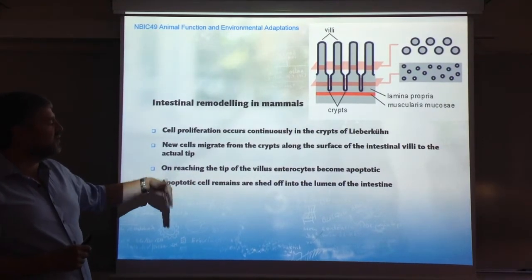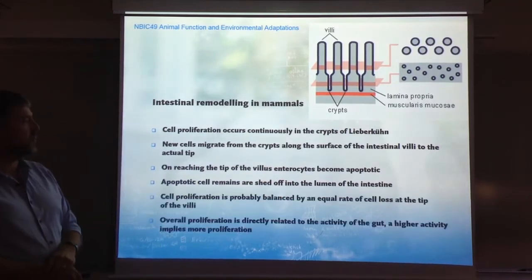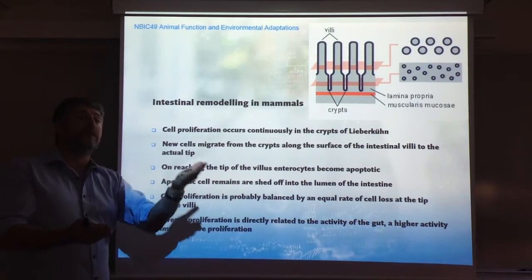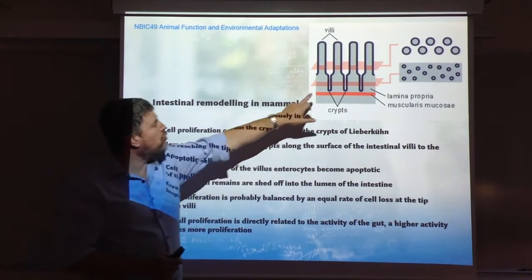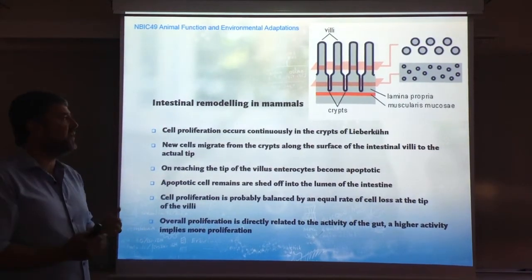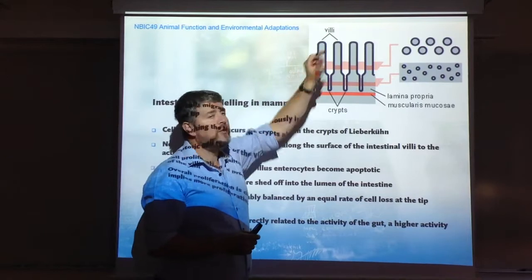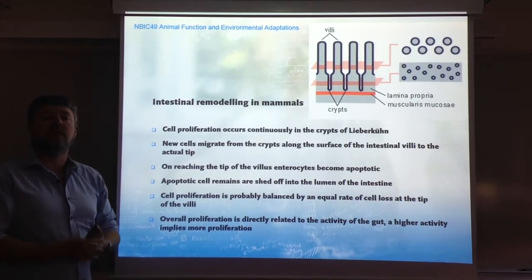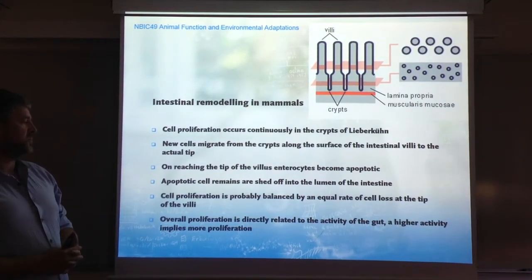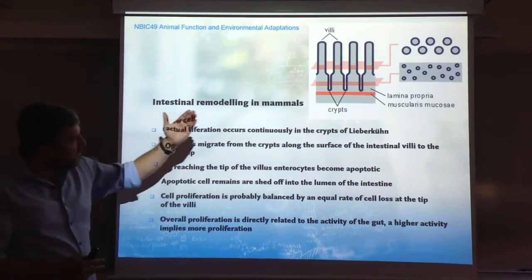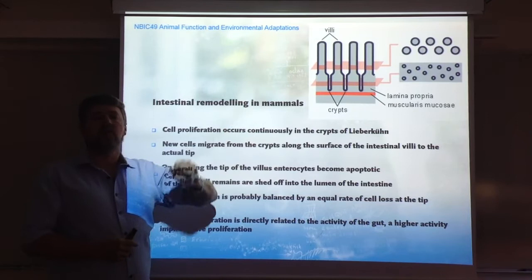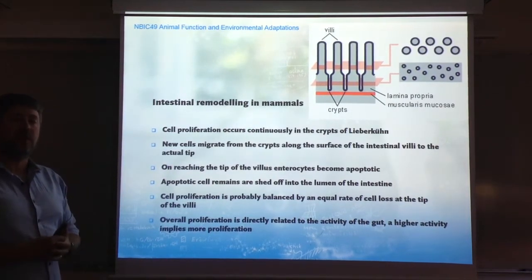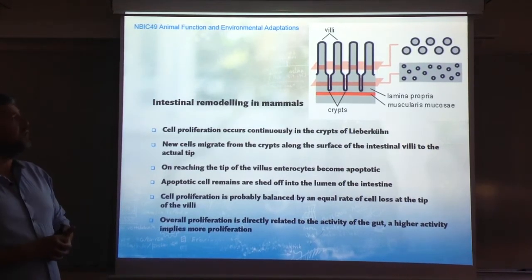When they reach the tip of the villus, these enterocytes become apoptotic — every cell in the body has a certain lifetime — and then they die. The remains of these cells are shed off into the lumen of the intestine. Therefore, the expectation is a system in which the formation of new cells, cell proliferation happening in the crypts, is balanced by the death of cells at the tip. This balance is what maintains the intestinal epithelium intact and functional. In general, this cell proliferation is related to the activity of the gut — the higher the activity, the higher the proliferation rates in this tissue.